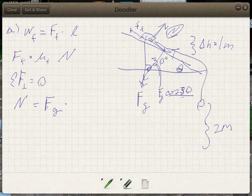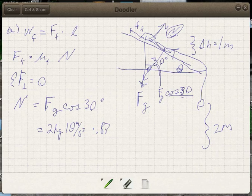So that is cosine of 30, which is 0.87. And so we've got 2 kilograms times 10 meters per second squared times 0.87, which is about 17.4 newtons.